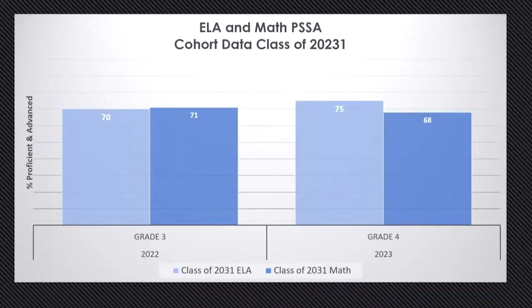This is our class of 2031. Taking a look at that, this is the information for our current fifth graders, and they have pretty similar scores across both of those bands for ELA and math.